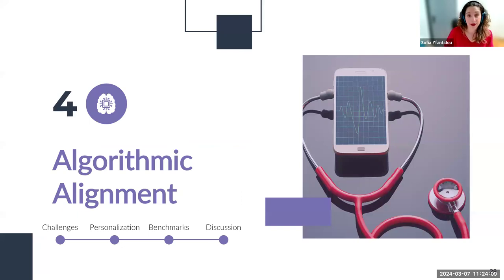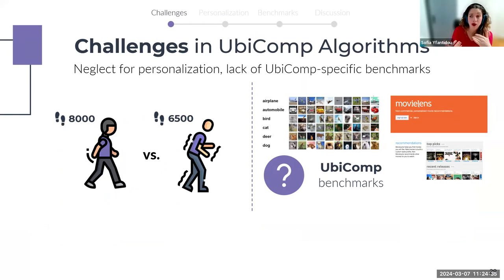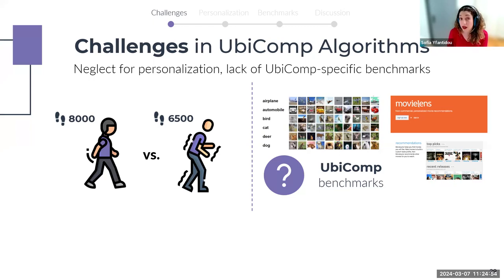Next, moving to algorithmic alignment. There are multiple challenges in building algorithms for ubicomp data. We focus first on the neglect for personalization in algorithmic development. For example, human activity recognition — perhaps the most popular algorithmic task in ubicomp — cannot just adopt a one-size-fits-all approach. I don't walk the same way or have the same posture as my grandfather, so our accelerometry time series measurements might signify different things. Also, there are no established ubicomp benchmark data and models, whereas in computer vision we have CIFAR-10, and in recommender systems we have MovieLens.